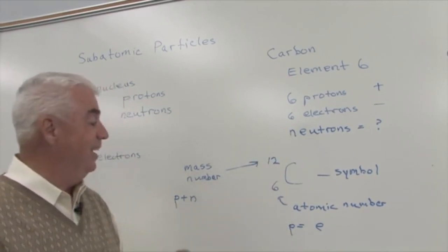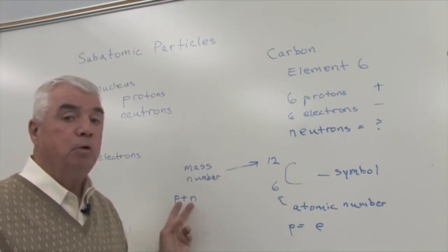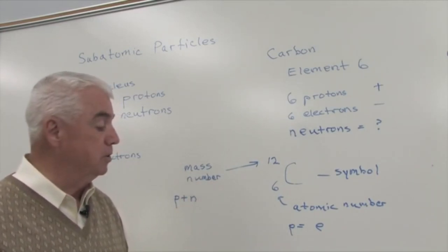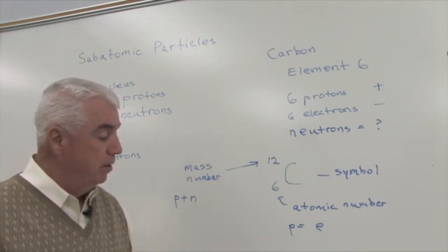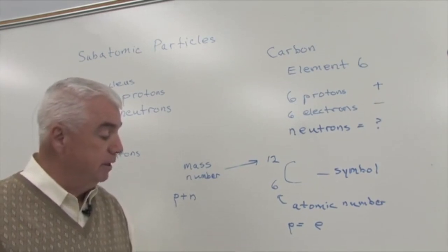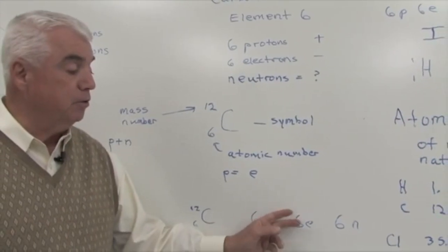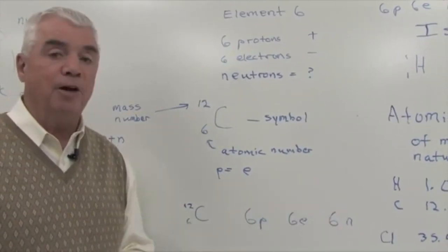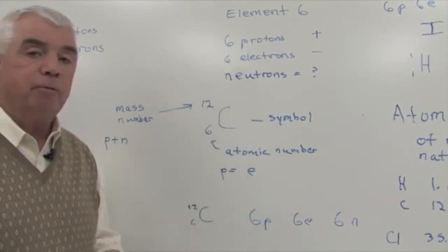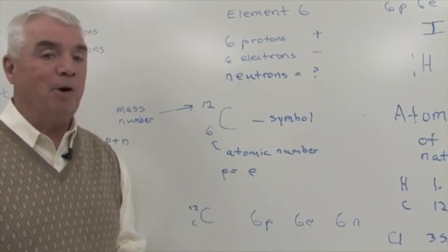This uppercase number is called the mass number because it's the sum of the protons and neutrons where most of the mass within the atom resides. So if we were given this information, we've got carbon-12 with the lowercase six, I know that it has six protons, six electrons, and six neutrons. And this is a skill that we'd like you to have, given information like this for an atom to be able to specify these numbers of subatomic particles.